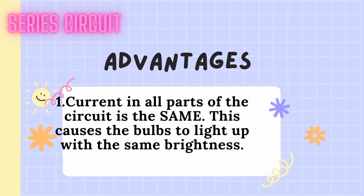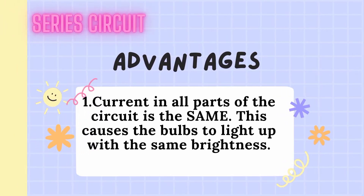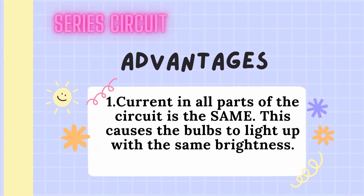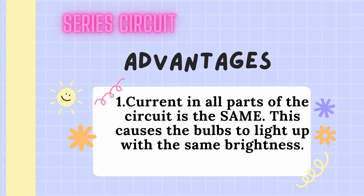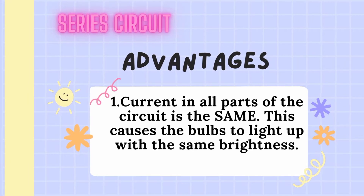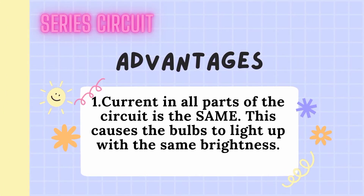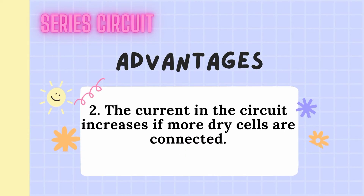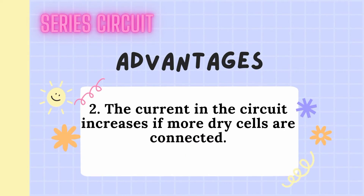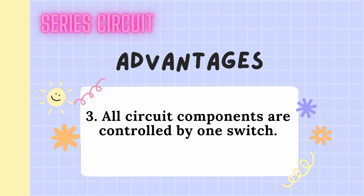Advantages of series circuit. 1. Current in all parts of a circuit is the same, which causes the bulbs to light up with the same brightness. 2. The current in the circuit increases if more dry cells are connected. 3. All the circuit components are controlled by one switch.